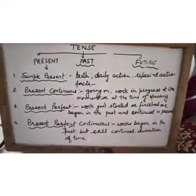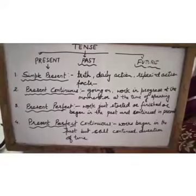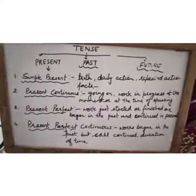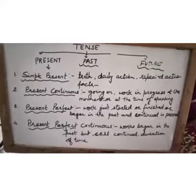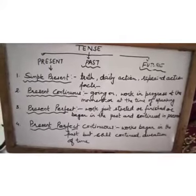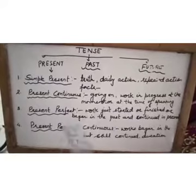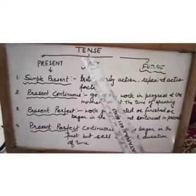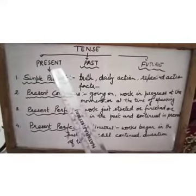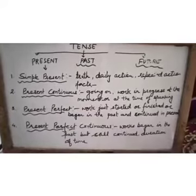What do you mean by tense? Tense means the tense of a verb shows the time of an action or event. A verb refers to present time, past time, or future time. So tense can be divided into three parts: present, past, and future tense.